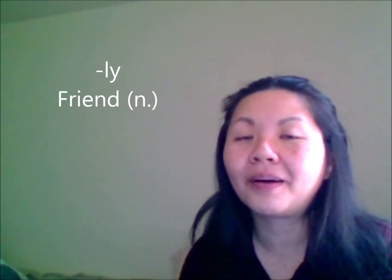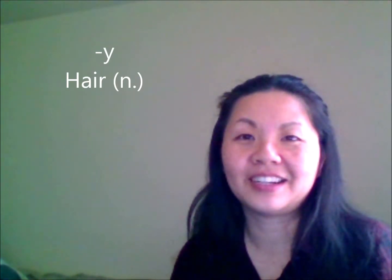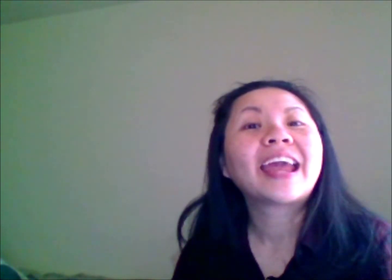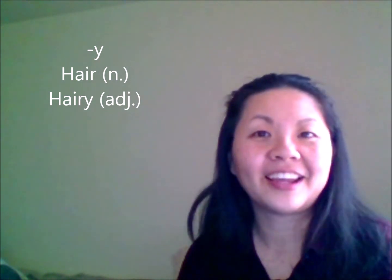The next one: "friend." How would you change this to an adjective by adding L-Y? Friendly — that's right. The students were very friendly. And the next one: "hair." Let's add the suffix Y — it becomes "hairy." His arms are hairy.